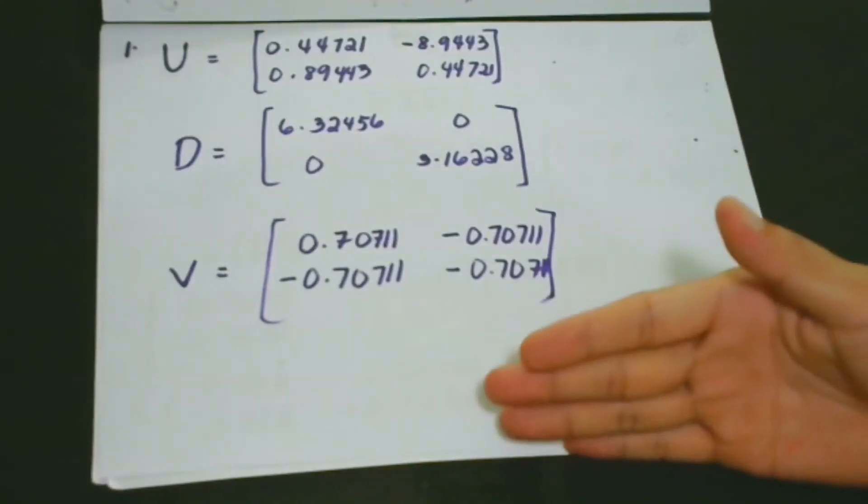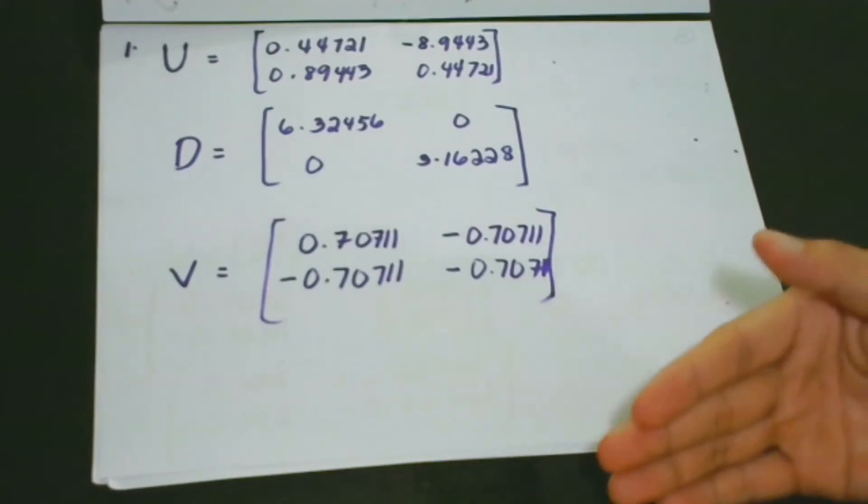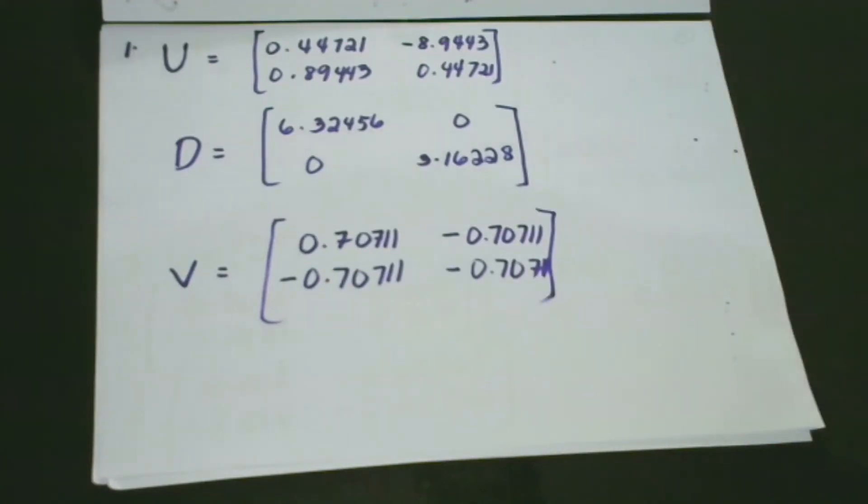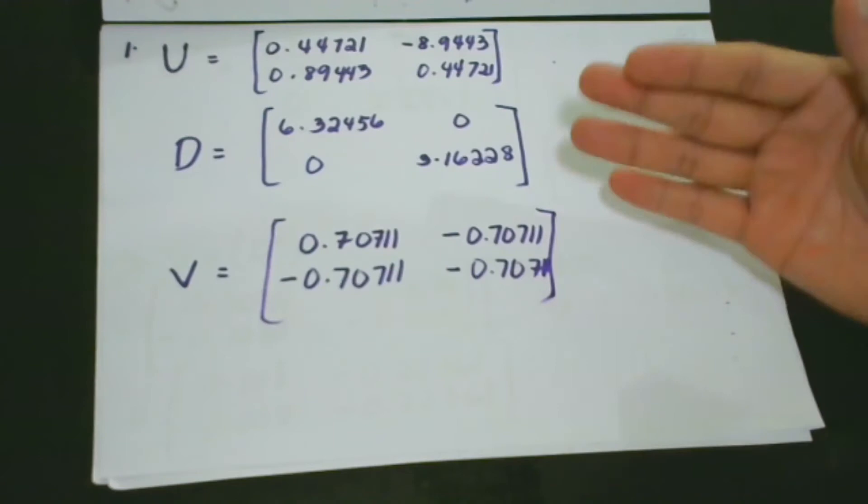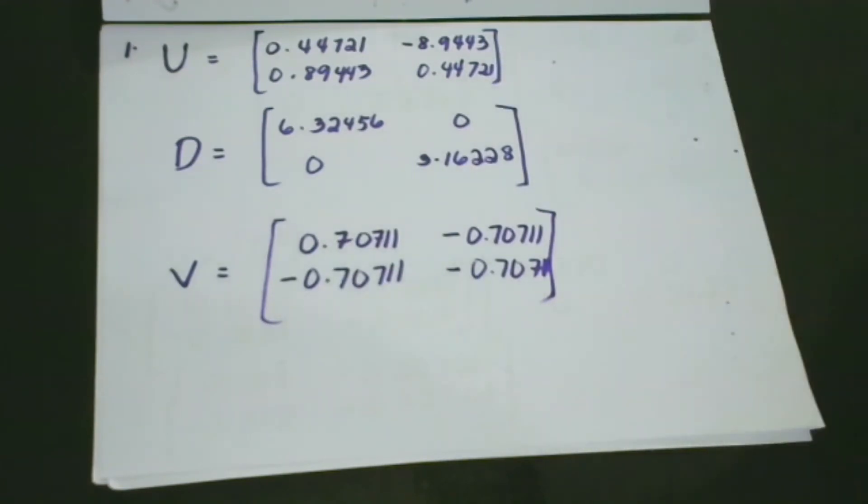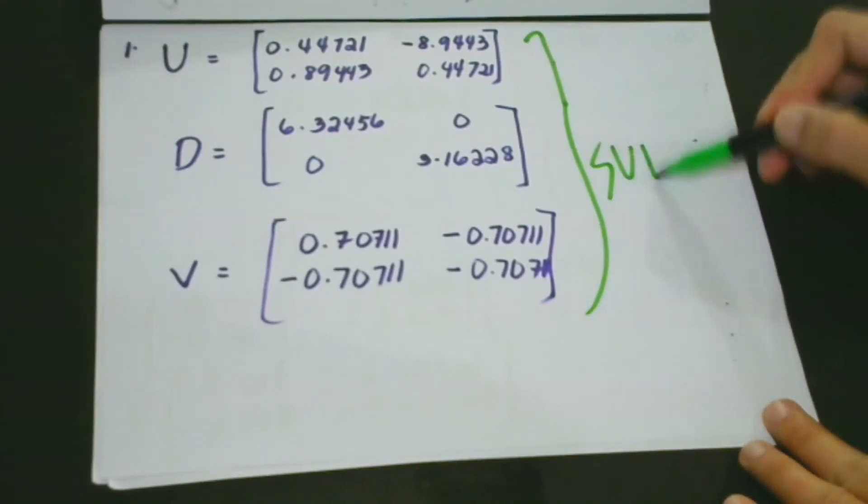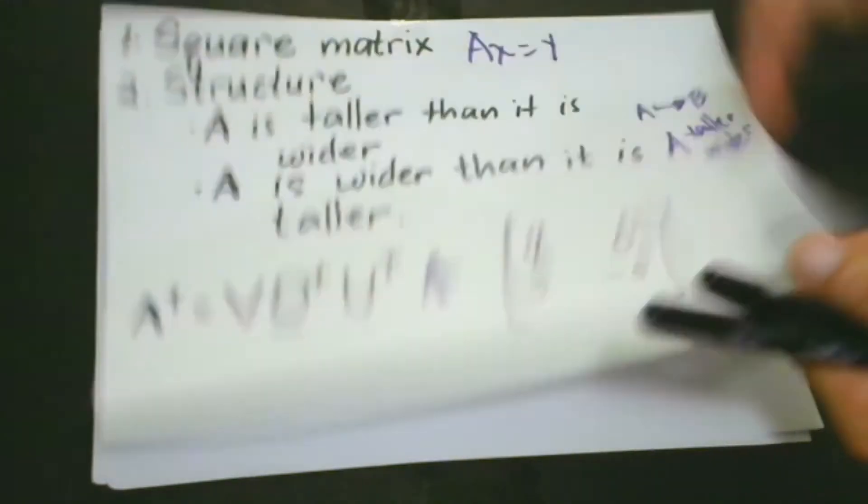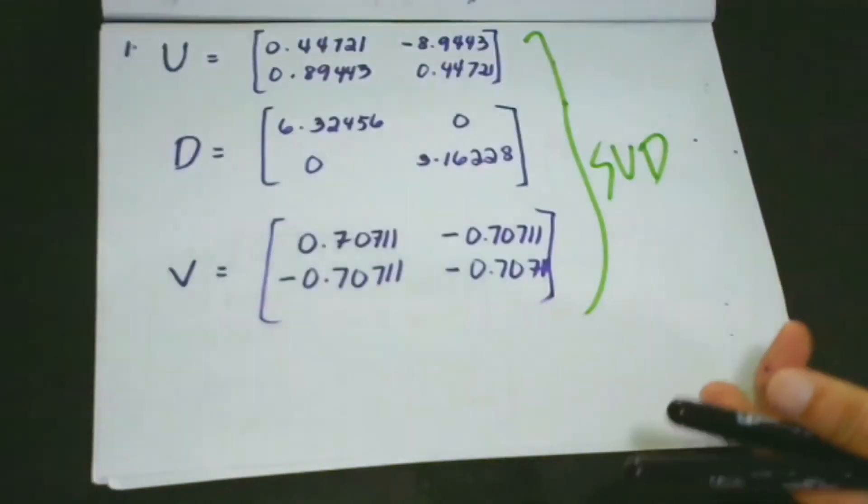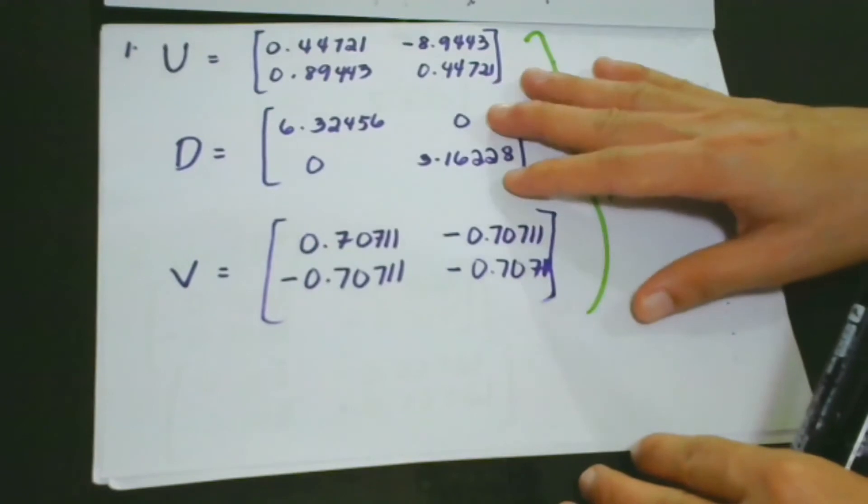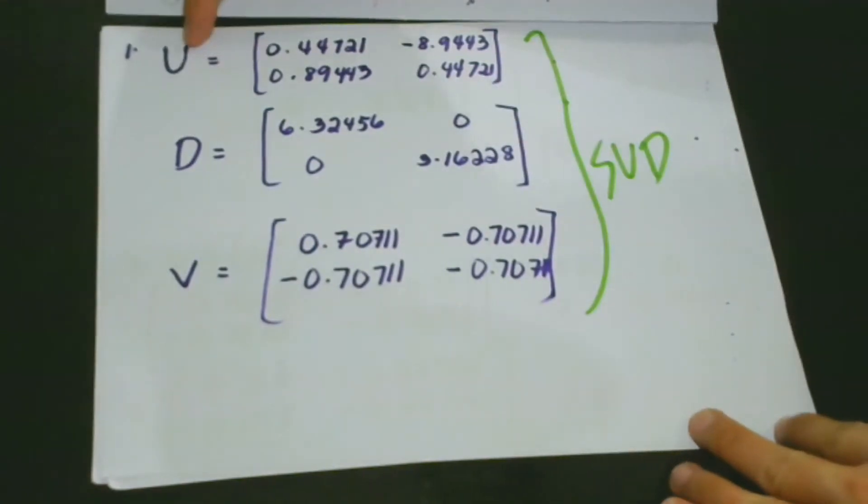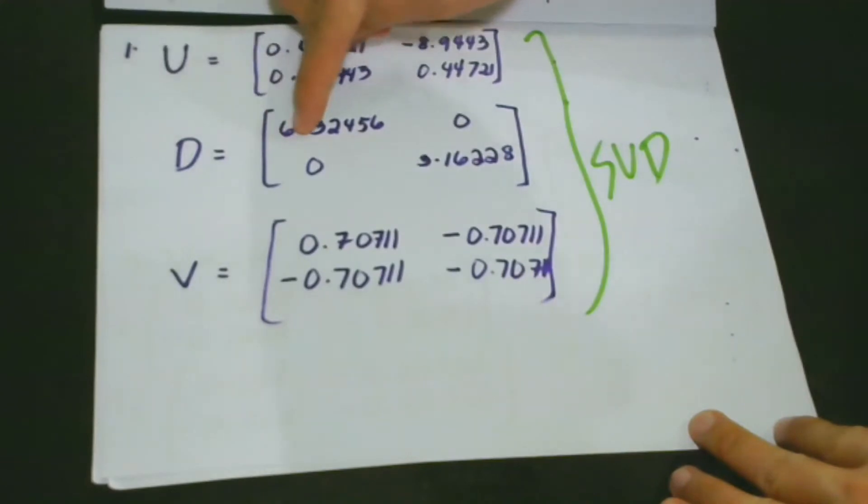The first thing that we are going to get is that we are going to compute for the singular value decomposition. This is the stepping stone for more steps later. These are the SVD of our matrix A. We don't have to go through the processes, but if you would like to check if this one is correct, you may do so. So we have U, this is the value of U, this is the value of the diagonal, and this is the value of V.